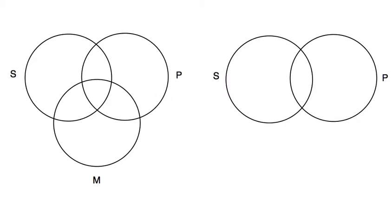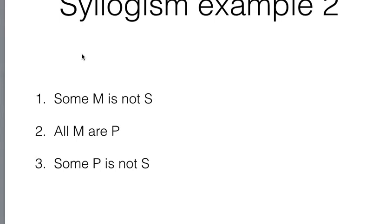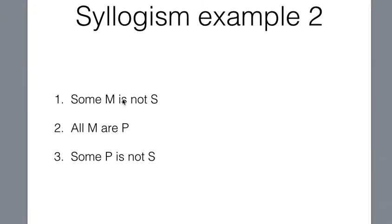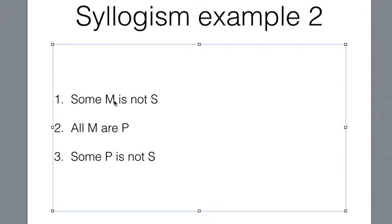All right, here's another example of a syllogism. So here's a second one: Some M is not S, All M are P, therefore some P is not S.